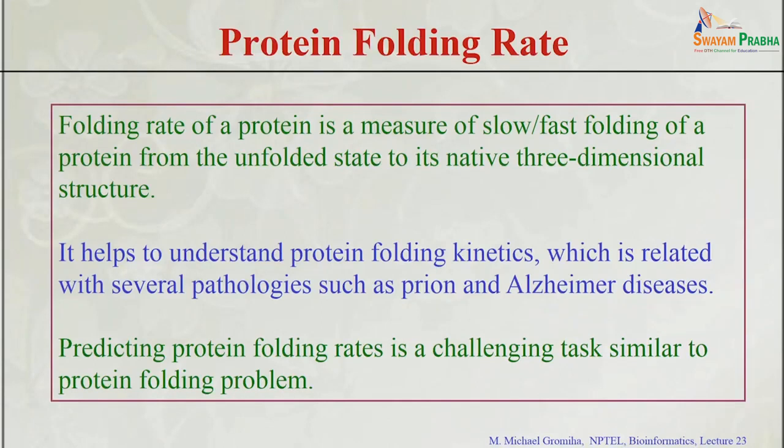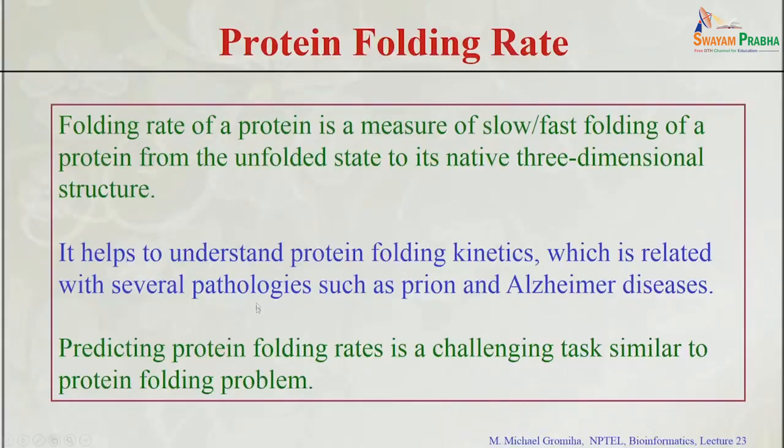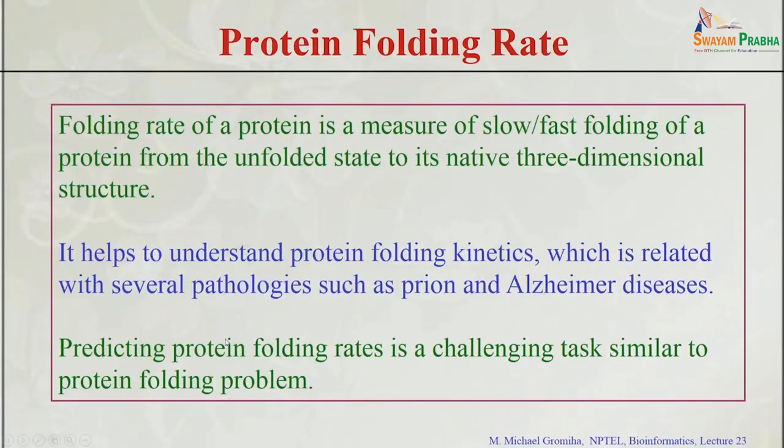Today we will deal with the folding rate. What does the folding rate of a protein mean? It is the measure of how slow or fast a protein folds from its unfolded state — the random coil conformation — to its native 3D structure. Why is it important? Because the folding rate helps us understand the kinetics related to several pathologies like prion diseases, Alzheimer's disease, and so on. It is very important to understand the folding rate, and predicting it is also a challenging task, similar to the protein folding problem.